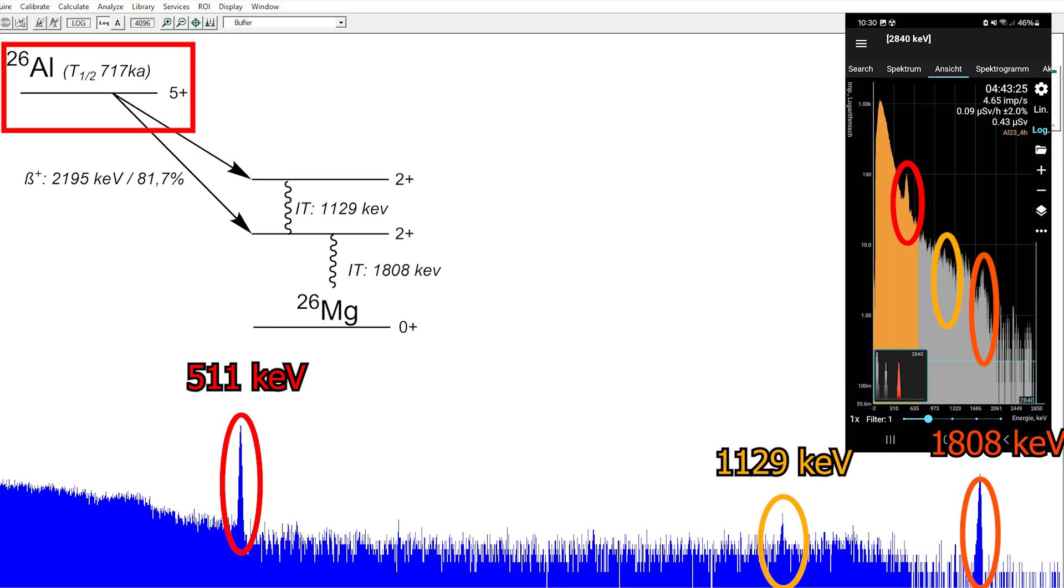Since the decay goes from a plus 5 state to a plus 2 state, which is quantum mechanically very forbidden, the aluminium-26 has a very long half-life. More on this in another video. Since it's a positron emitter and positrons are antiparticles, we have a rather large 511 keV peak, which is of course included in the spectrum.